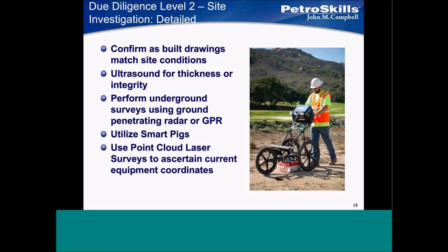Ultrasound for thickness testing or integrity. Ground penetrating radar — you see a gentleman pushing something that looks like a fancy lawnmower, but that's a GPR unit. Smart pigs. Point cloud laser surveys. Some of my clients have done point cloud laser surveys on their entire facilities — refineries or petrochemical units here in the U.S. — so they know the XYZ coordinates for everything. This is pretty inexpensive now.